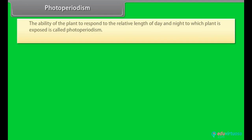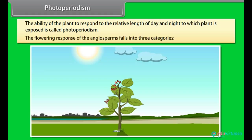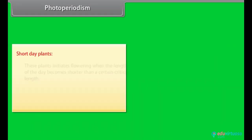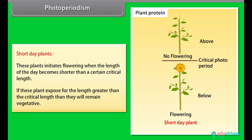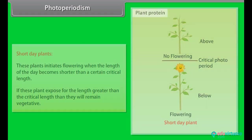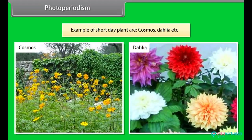Photoperiodism. The ability of plants to respond to the relative length of day and night to which the plant is exposed is called photoperiodism. The flowering response of the angiosperms falls into three categories. Short day plants. These plants initiate flowering when the length of the day becomes shorter than a certain critical length. If these plants are exposed for the length greater than the critical length, then they will remain vegetative. Example of short day plants are cosmos, dahlia, etc.